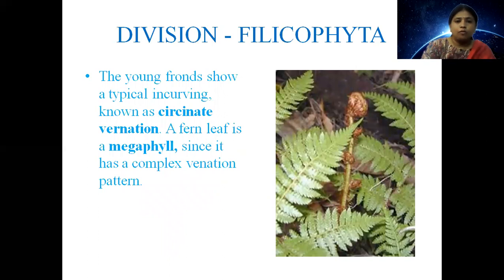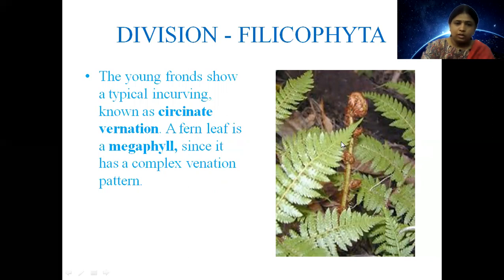The young fronds show a typical incurving known as circinate vernation. A frond leaf is a megaphyll since it has a complex venation pattern. We are looking at the young fronds — the curve is made inward in a coil shape and opens outward as the frond matures. The leaves change form in this process; this habit is called circinate vernation.